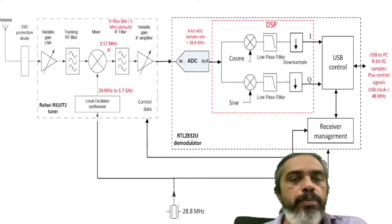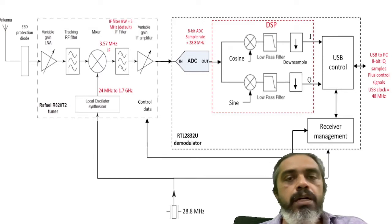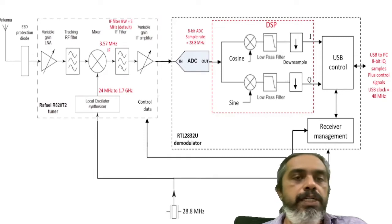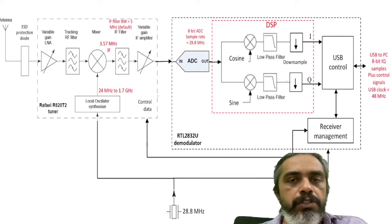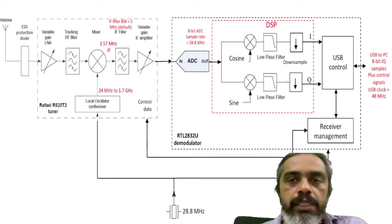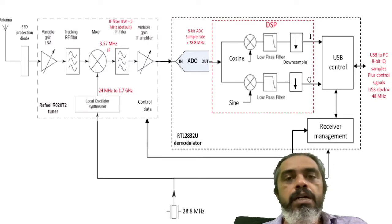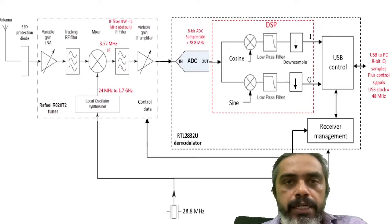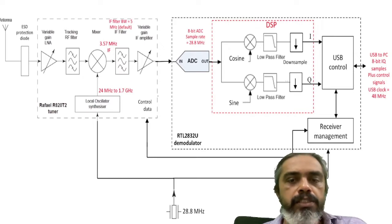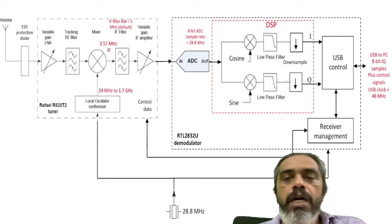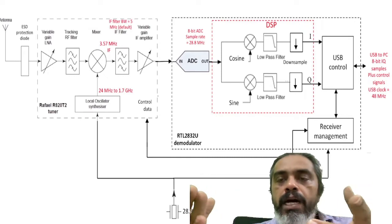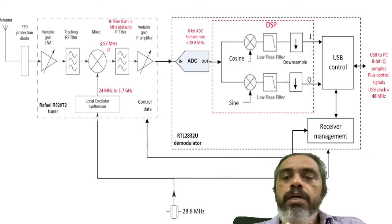The local oscillator can be varied from 24 MHz to 1.7 GHz, producing an intermediate frequency of 3.57 MHz. There is an IF filter and then a variable gain amplifier. The Rafael Micro chip is essentially a tuner which can tune anywhere from 24 MHz to approximately 1.5 GHz. This signal is fed to an ADC - the signal has been down-converted to a lower frequency. This ADC samples the signal at 28.38 MHz using a crystal oscillator, and generates I and Q quadrature signals, which are then down-converted to a lower sampling rate and sent via USB to the computer.